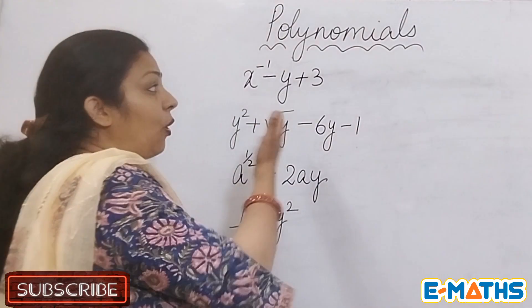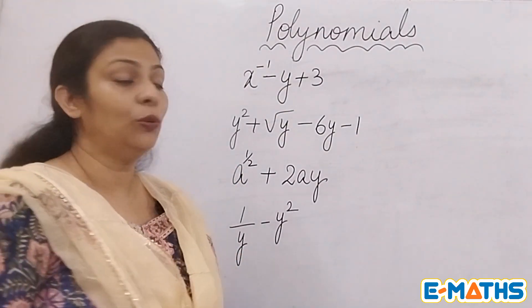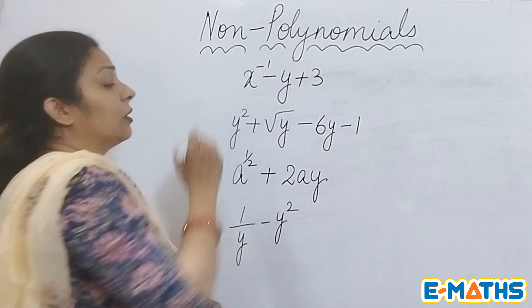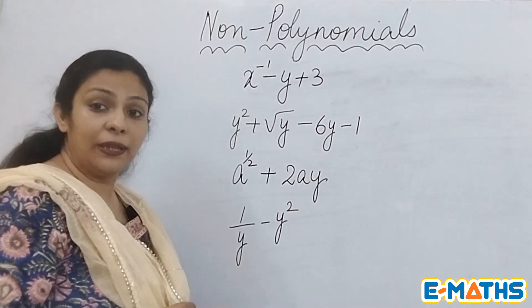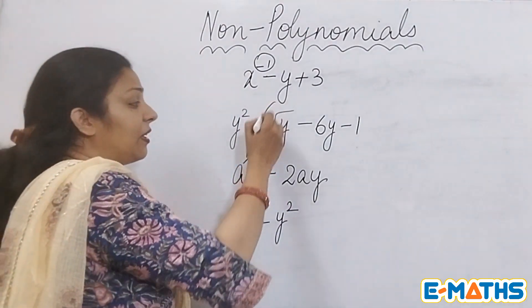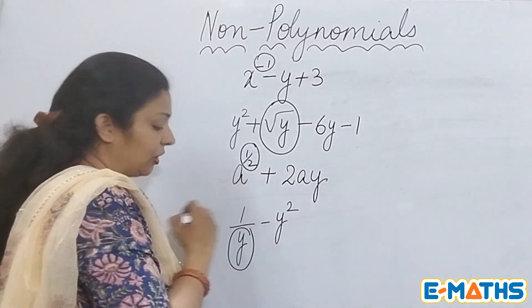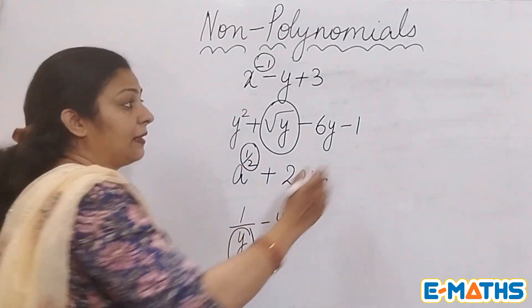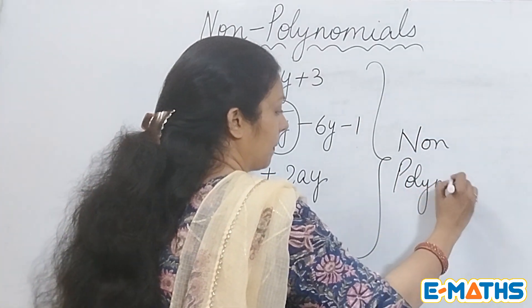Now I have erased the previous expressions and written new expressions here just to tell you that these all are non-polynomials. As you can see the difference - in my previous expressions there was no such variable which was having a negative power, which was having a variable under root, which was having a fractional power, or which was in the denominator. All these factors make it a non-polynomial.